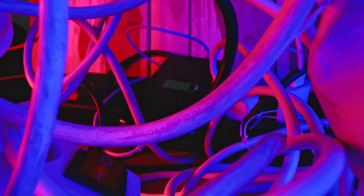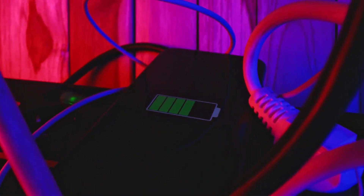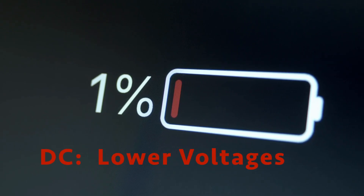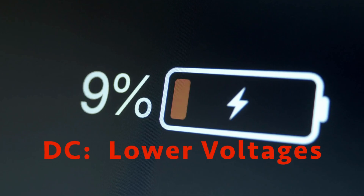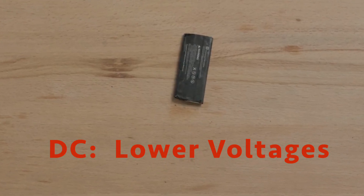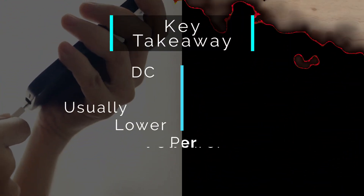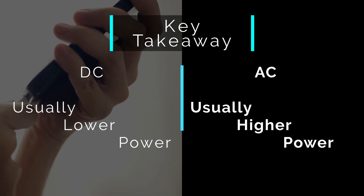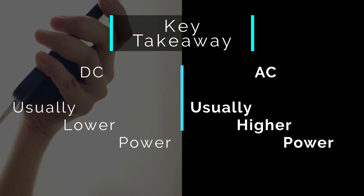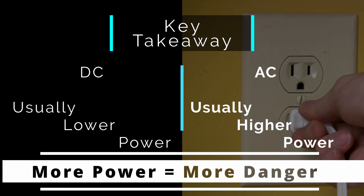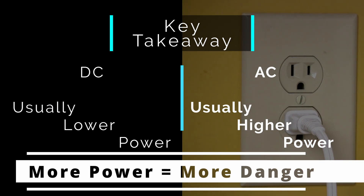DC is found in batteries and modern electronics, which are usually low voltage devices and therefore safe to touch. However, they can still easily start a fire if shorted. All live circuits have dangers associated with them, but usually the more power, the more dangerous it is.